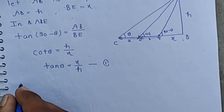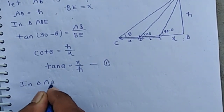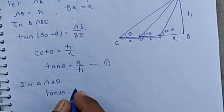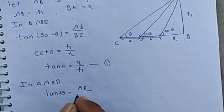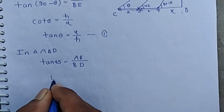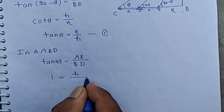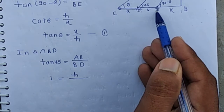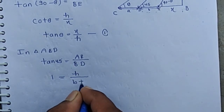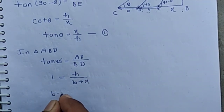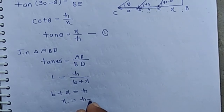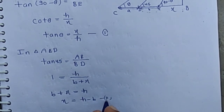Now in triangle ABD, tan 45 equals perpendicular upon base, which is AB by BD. tan 45 is 1, AB is h, and BD is the sum of DE and EB, meaning BD equals b plus x. Then b plus x equals h, so the value of x is h minus b. Let this be equation two.